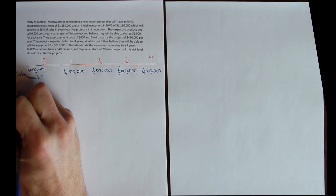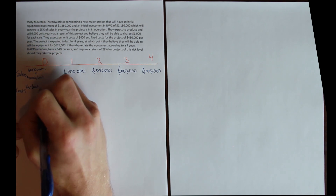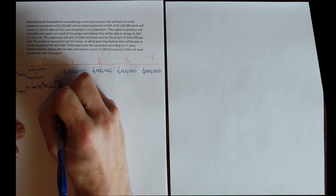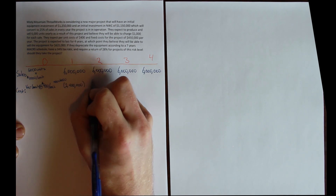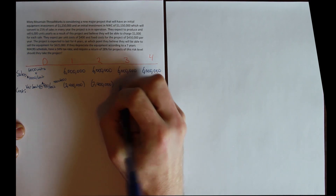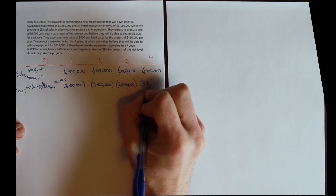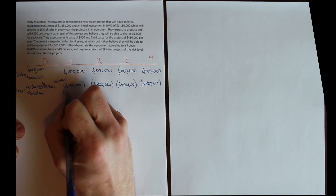Next we have costs — sales minus costs. We have two types: variable costs and fixed costs. Variable costs are $400 per unit, so $400 times 6,000 gives us variable costs of $2.4 million. Fixed costs don't vary with units sold; they are $450,000 per year.